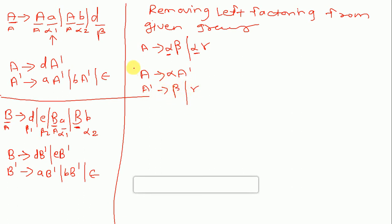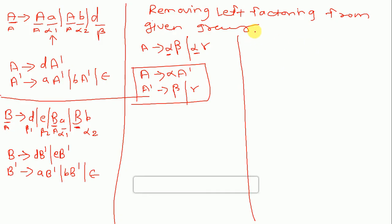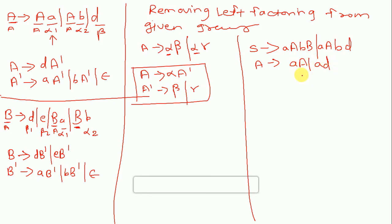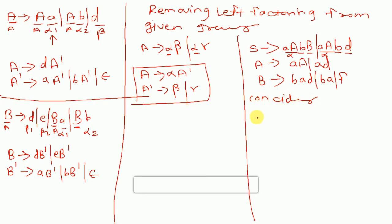We'll have an example. Suppose S gives a a b b slash a a b d slash a a a b slash a b. Now 'a a b' is common in the first two productions — this is our alpha, 'b' is beta, 'd' is gamma.